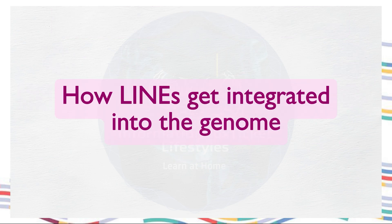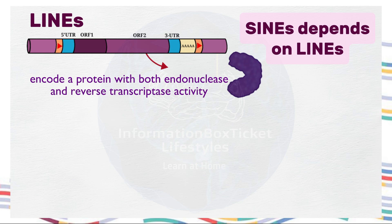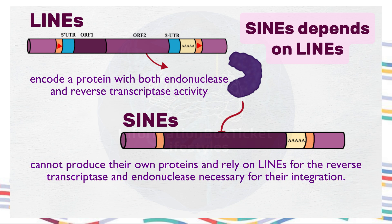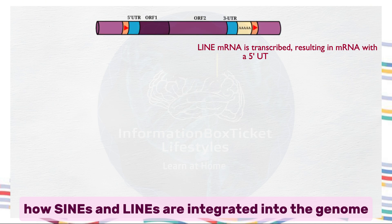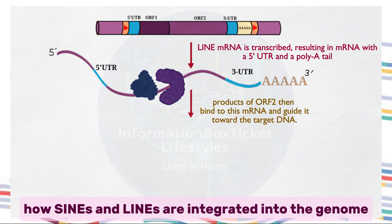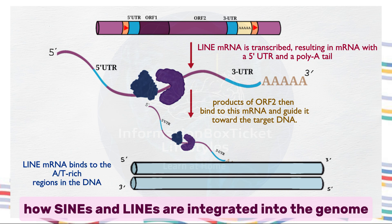Let's see how LINEs get integrated into the genome. It's important to note that LINEs encode a protein with both endonuclease and reverse transcriptase activity. This enzyme is crucial not only for LINE integration, but also for SINE integration, as SINEs cannot produce their own proteins and rely on LINEs for the reverse transcriptase and endonuclease necessary for their integration. Initially, LINE mRNA is transcribed, resulting in mRNA with a 5' UTR and a poly-A tail. The products of ORF2 then bind to this mRNA and guide it toward the target DNA. Typically, LINE mRNA binds to the A/T-rich regions in the DNA.